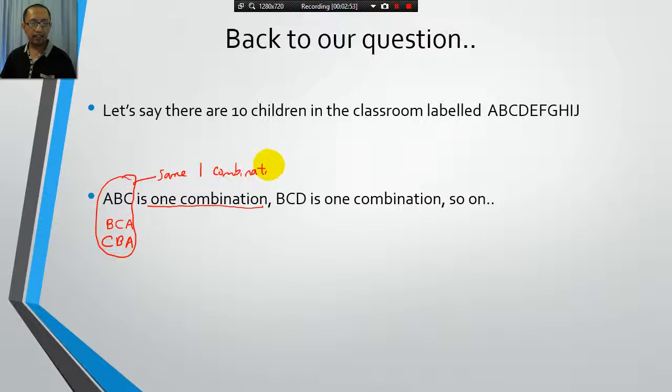Okay, you can't say that there are three combinations, they're just one combination. So how many combinations are there? Right, that was the question. How many combinations can we get when we pick three children out of ten children?